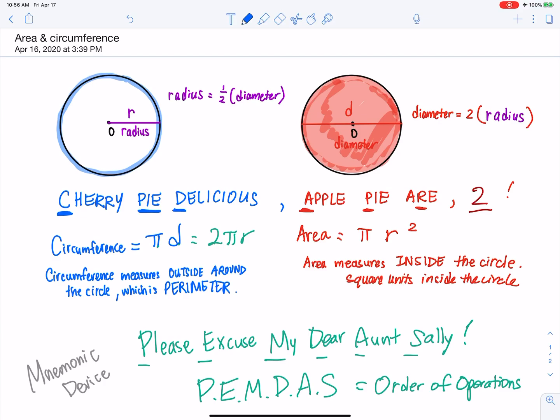Cherry Pie Delicious Apple Pie R2. Cherry Pie Delicious Apple Pie R2. Circumference equals pi times diameter. Area equals pi r squared.